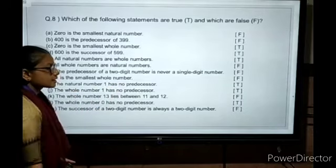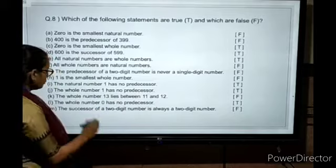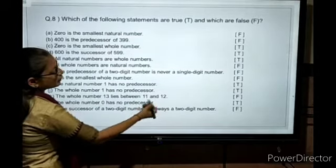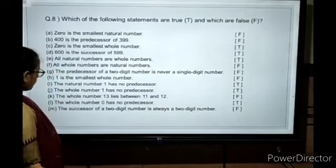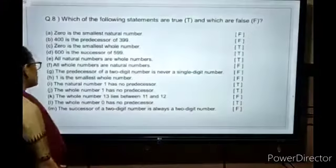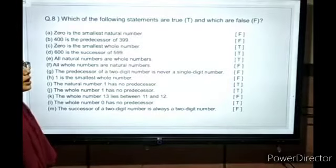The whole number 1 has no predecessor - True. The whole number 13 lies between 11 and 12 - No, False. The whole number 0 has no predecessor - True. The successor of a two-digit number is always a two-digit number - False.